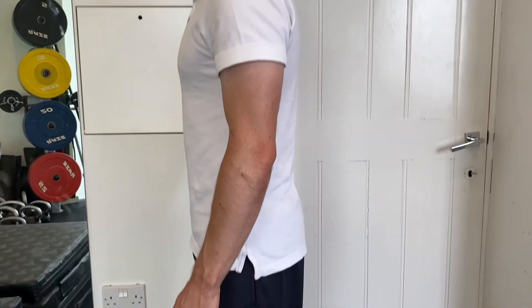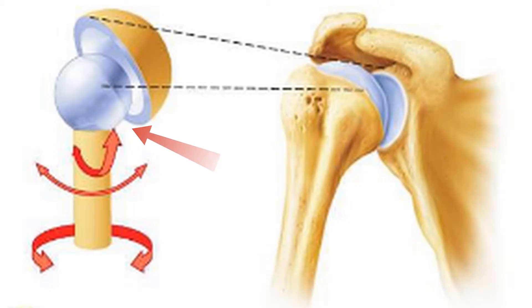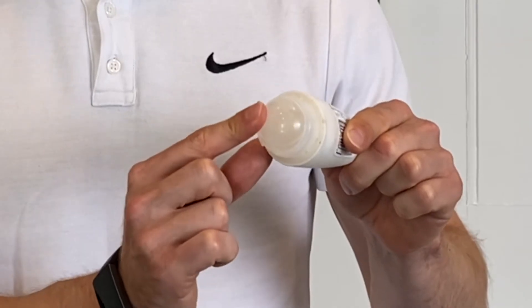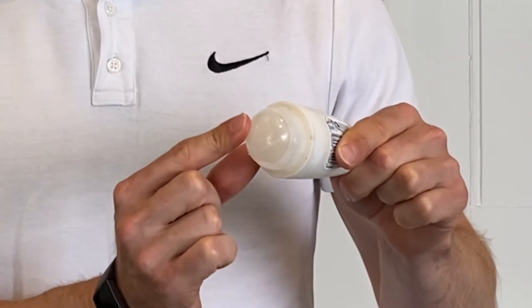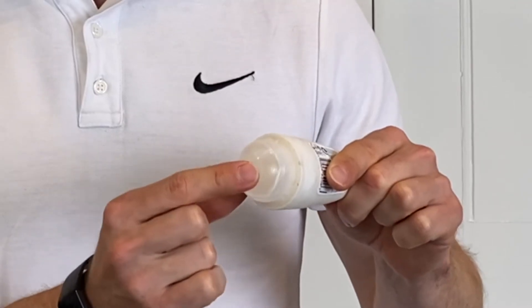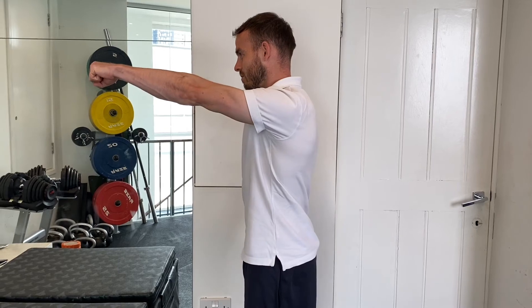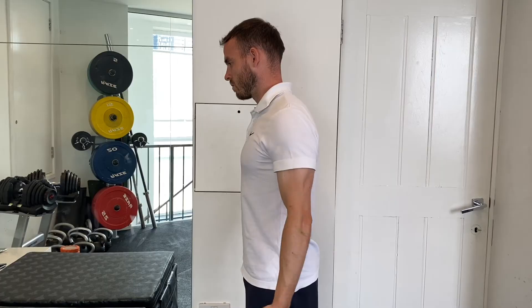Now we will move on to the ball and socket joint. The ball and socket joint is found at the shoulder and the hip. The ball at the top of a long bone sits in a socket, allowing a great range of movement. Movements possible include flexion, extension, abduction, adduction, rotation, and circumduction. These movements are also possible at the hip.